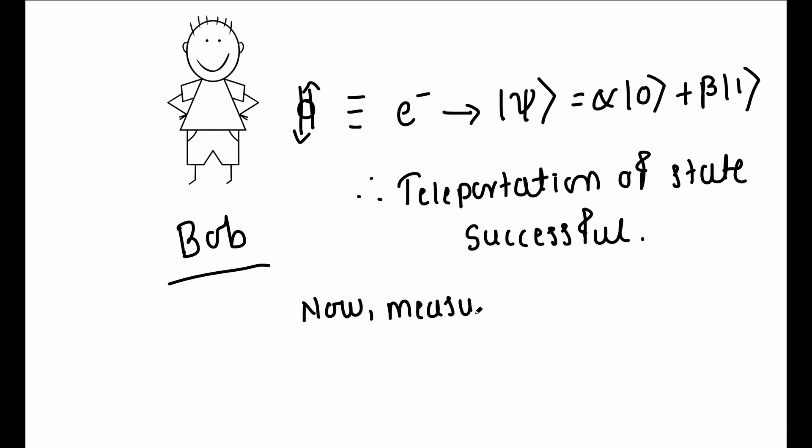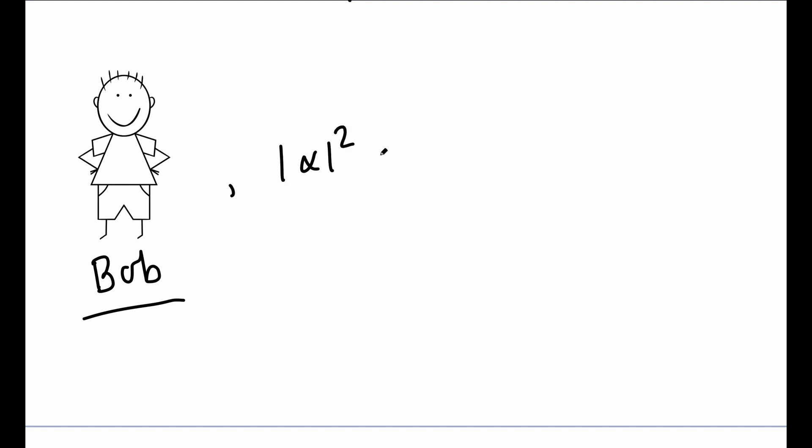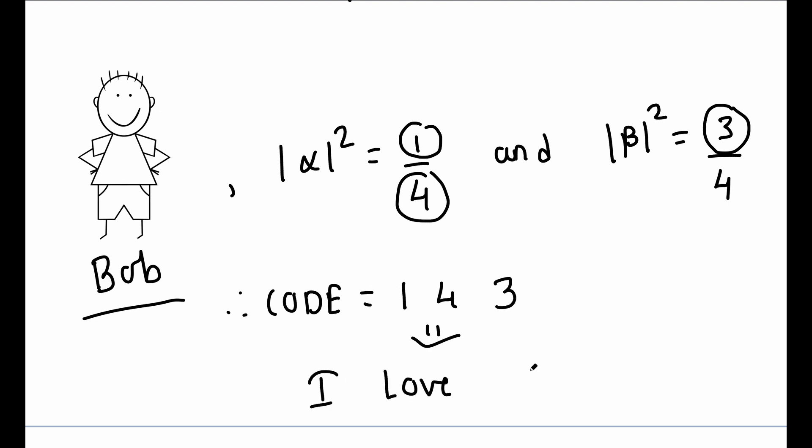After that, Bob measures his state. And then they repeat the teleportation procedure many times with the same state psi. By doing this, Bob finds that mod alpha square is equal to 1 by 4 and mod beta square is equal to 3 by 4. He gets the code, decrypts it and finds that Alice has actually proposed him using quantum teleportation.